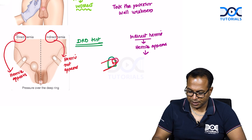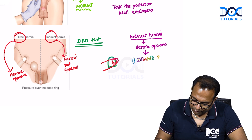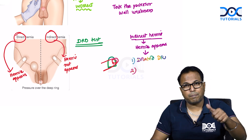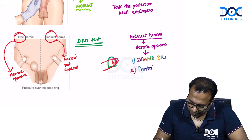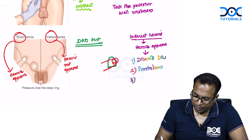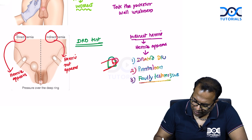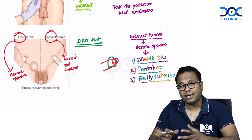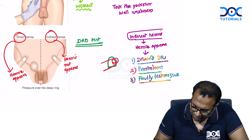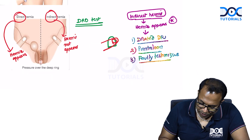There are exceptions where indirect hernia can still appear during deep ring occlusion: number one, a dilated deep ring — when the deep ring is very large, you cannot compress it entirely with one thumb; number two, pantalone hernia, where both direct and indirect hernias are present; and number three, faulty technique where the deep ring was not compressed correctly.